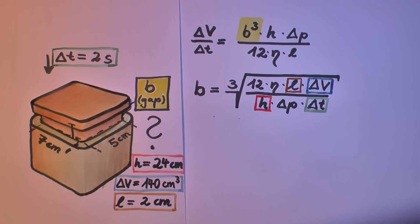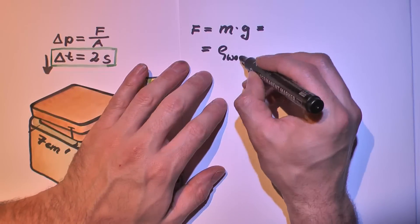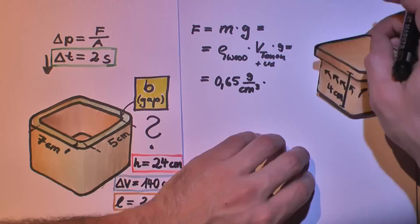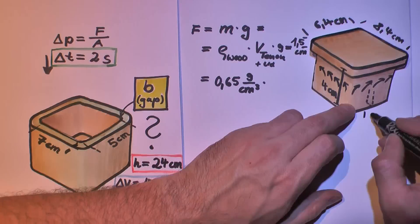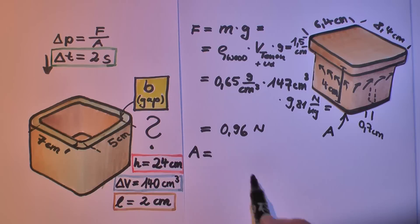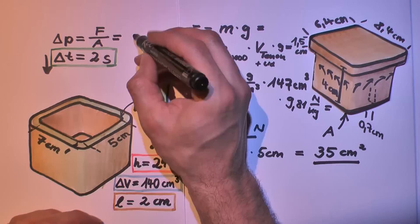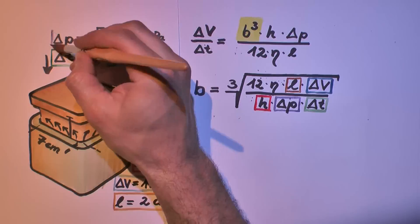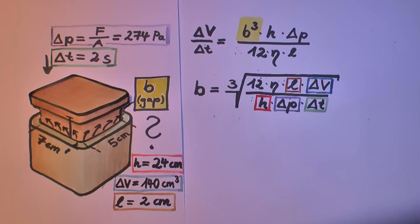A bit more difficult is the calculation of the pressure. It's force per area. The force is the gravitational force. We need the density of wood and the volume of the top. Again guessed from the video. So the pressure might be 274 Pascal.